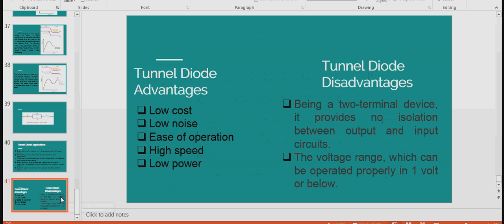Tunnel diode advantages: low cost, low noise, ease of operation, high speed, low power. What are the disadvantages of tunnel diode? Being a two-terminal device, it provides no isolation between output and input circuits. The voltage range which can be operated properly is one volt or below. Even at 0.1 volt, it will start to conduct drastically. Whereas, ordinary P-N junction diode or the Zener diode starts to conduct above 0.6 volt. Schottky barrier diode starts to conduct above 0.15 volt. Whereas, tunnel diode, just above 0 volt, 0.1 volt or 0.05 volt, the tunnel diode starts to conduct drastically. So that is the main disadvantage of tunnel diode.